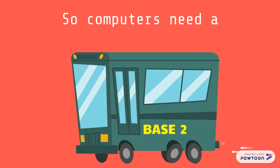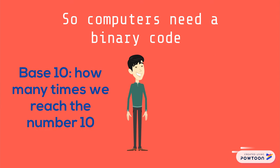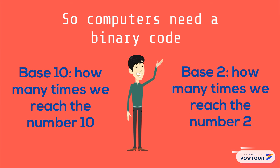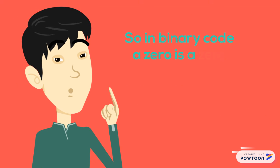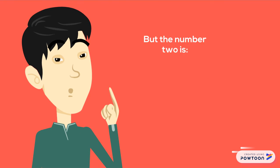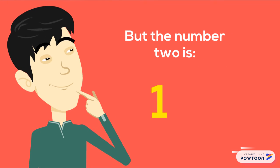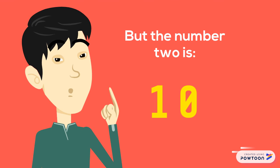So computers need a binary code, otherwise known as base 2. It works the same as base 10, but instead it tells us when we reach the number 2 by using the number on the left. So in binary code, a 0 is a 0, and a 1 is a 1, but a 2 is a 1 and a 0. It looks like a 10, but it's not — it's a 2.